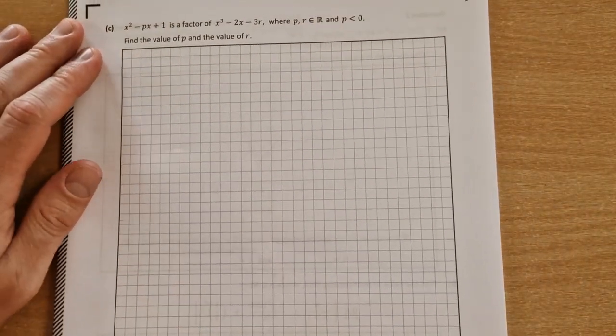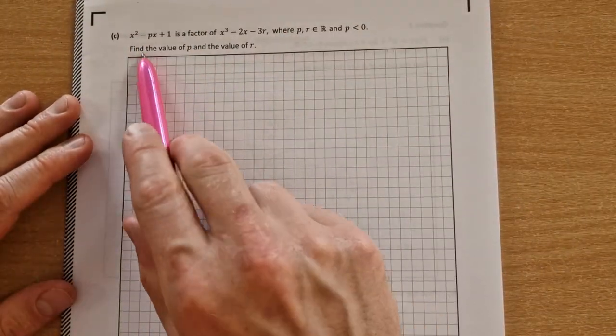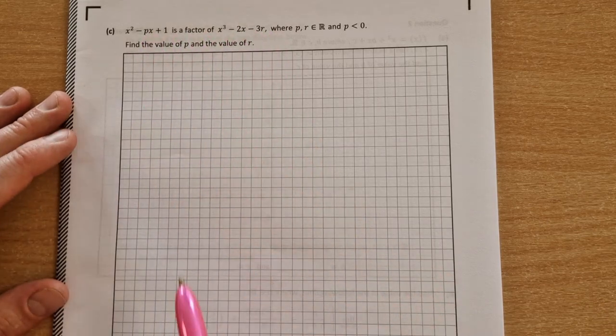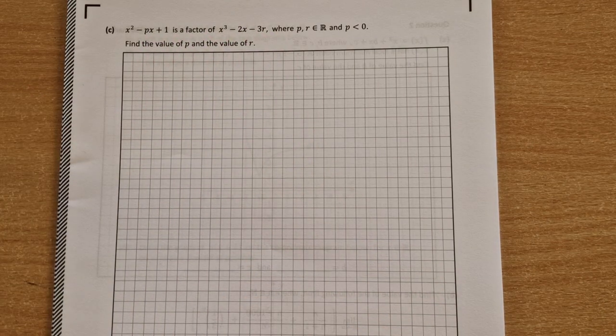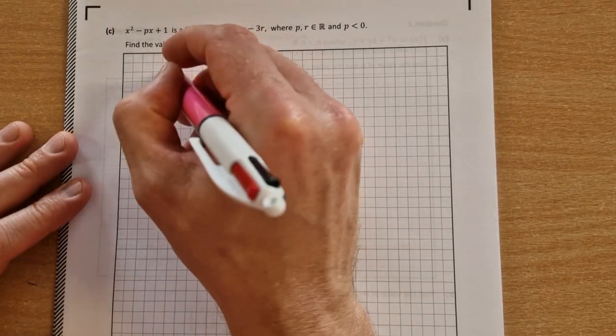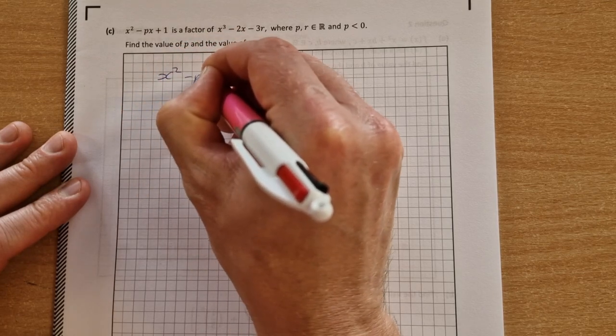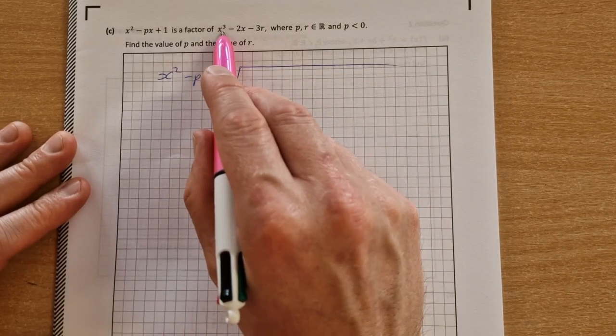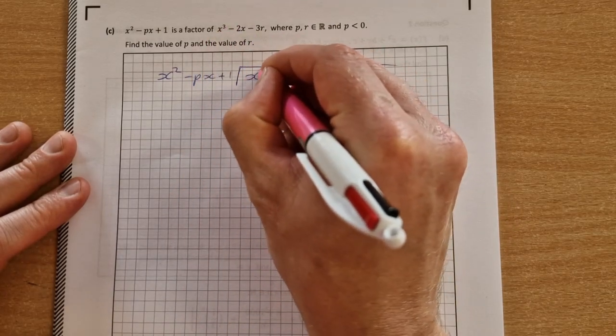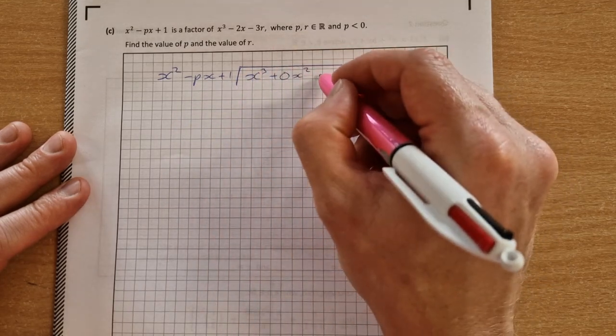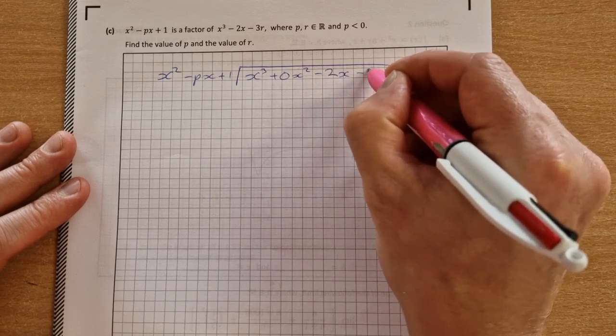On to part c then, the final part, which was a long division question, and a difficult enough question. Divide, this is a factor of this, so you divide this into that, but we're asked to find the values of p and the values of r when we do it. So we're going to start with our long division, so it's x squared minus px plus 1, dividing into this, and I'm just going to add in a 0x squared. So it's going to be into x cubed plus 0x squared. That's going to make it just a bit neater and easier for me. Minus 2x minus 3r.